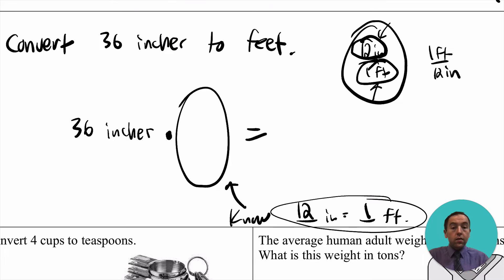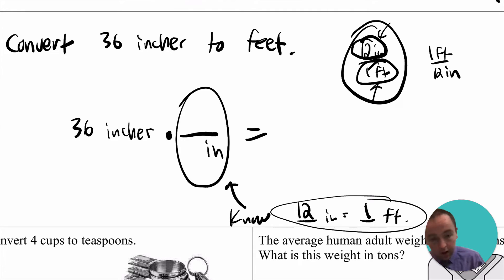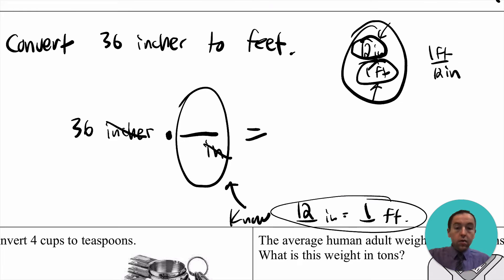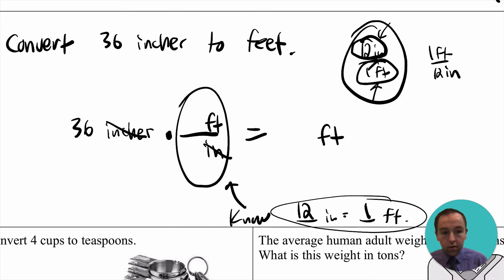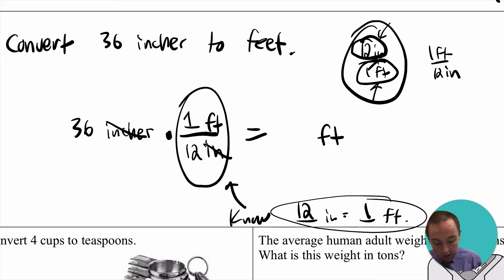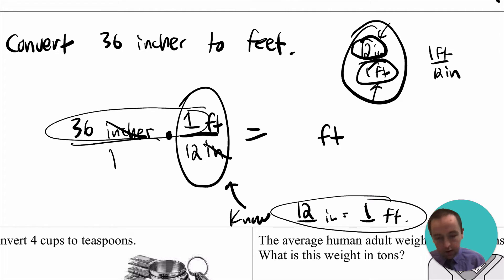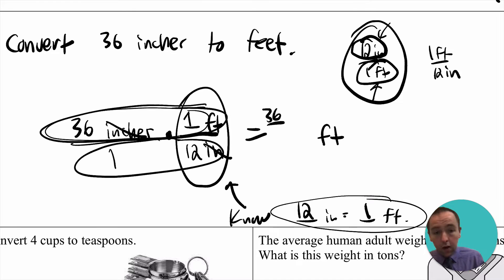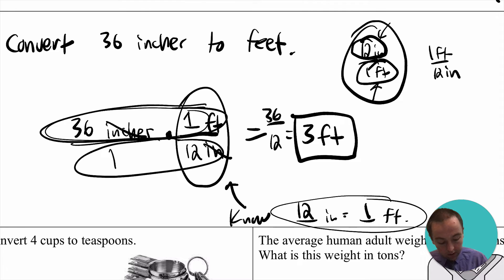We want units to cancel through the unit analysis process. Since I'm starting in inches, I need inches on the bottom of the fraction so they cancel out, leaving feet on top as my final unit. The appropriate numbers are one foot on top and 12 inches on bottom. Multiplying across: 36 times 1 equals 36 on top, and 1 times 12 equals 12 on bottom. So 36 divided by 12 equals 3 feet — that's the answer.